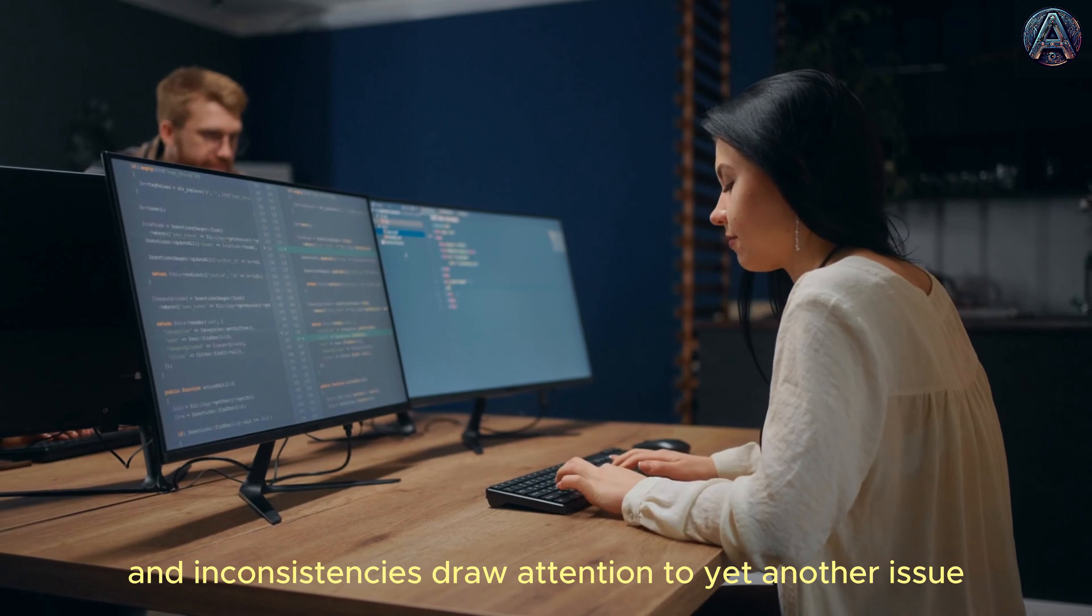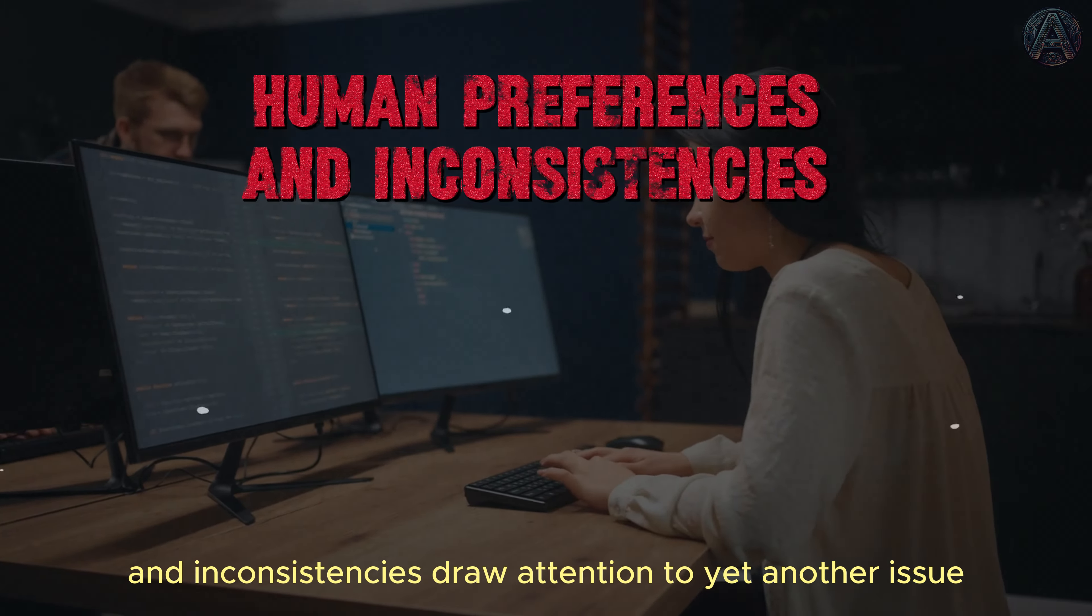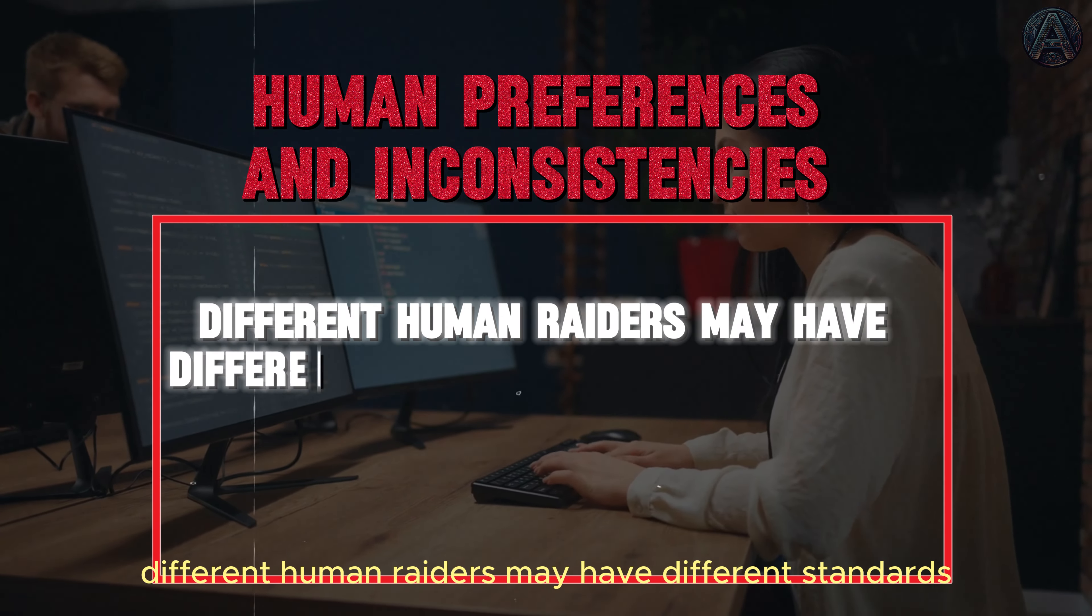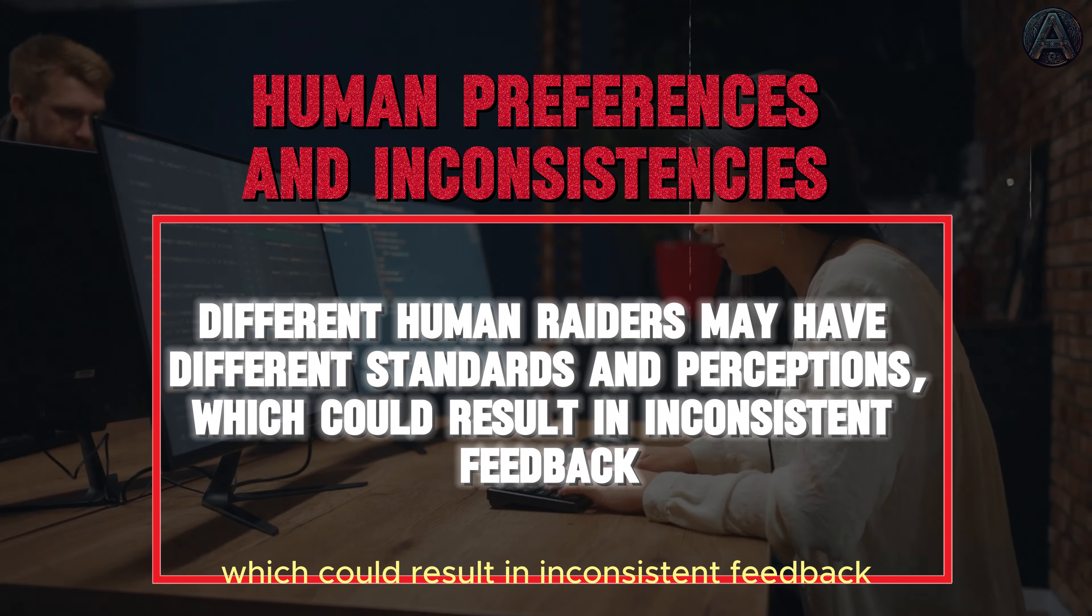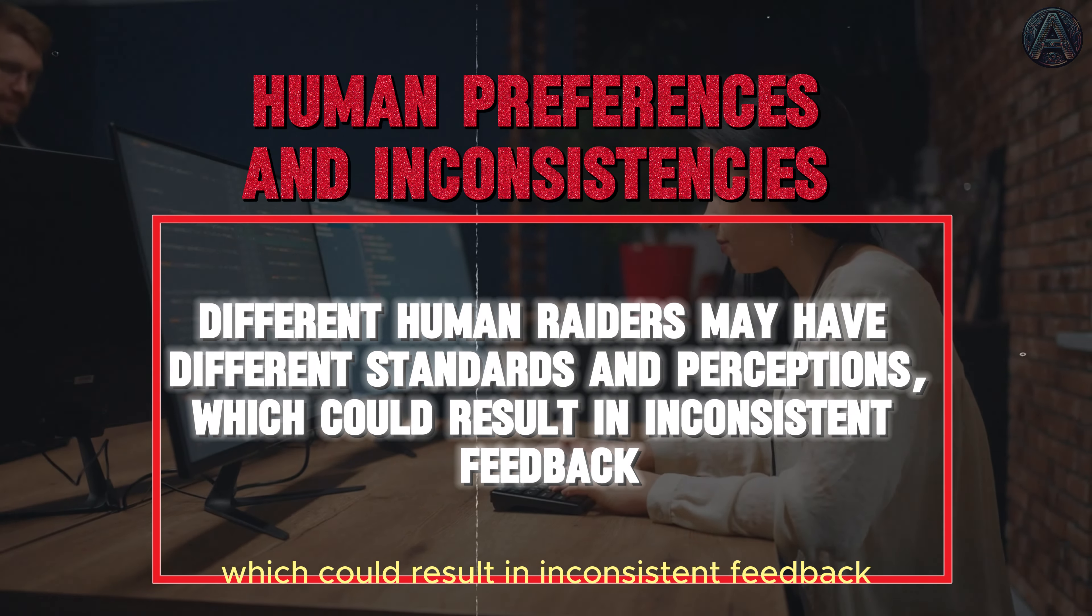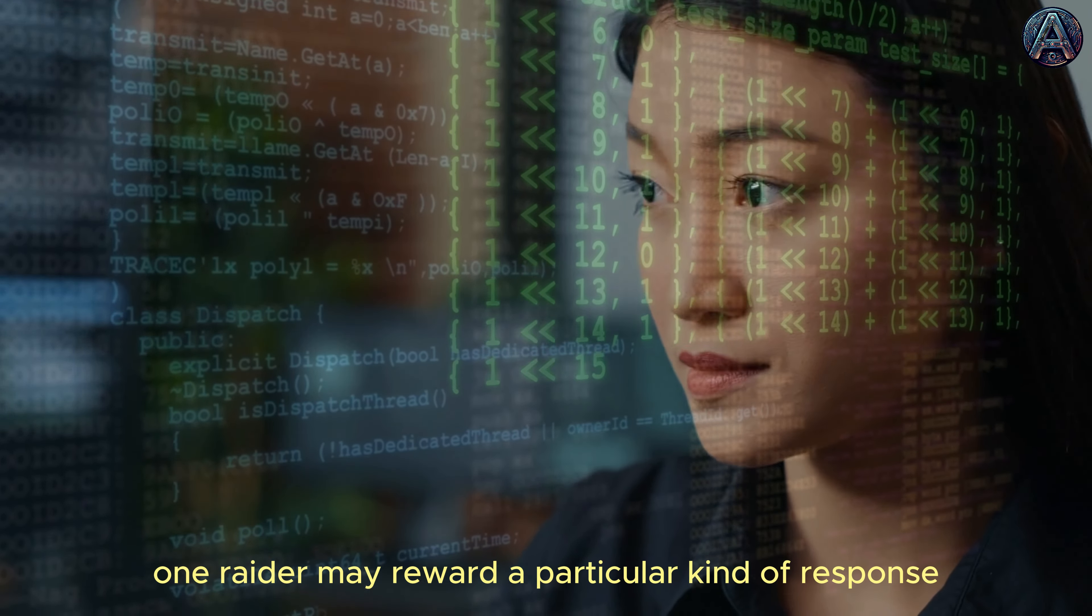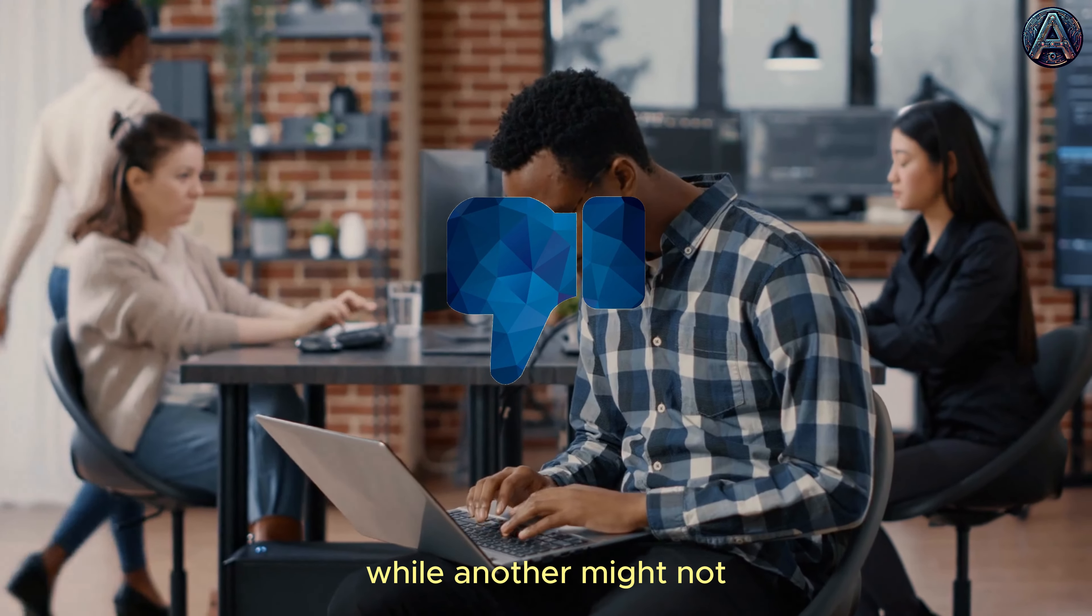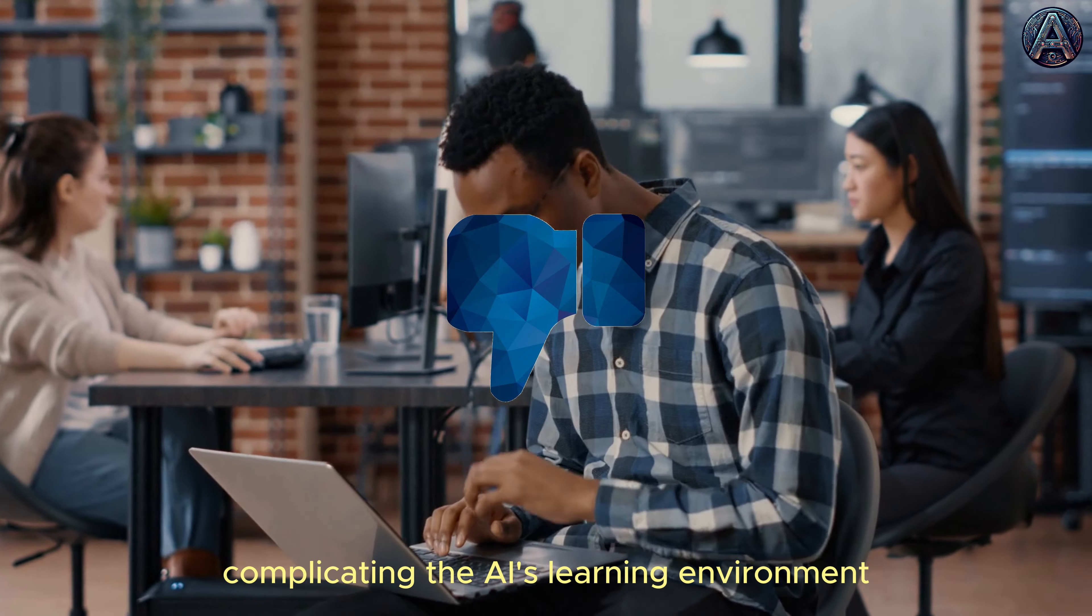Human preferences and inconsistencies draw attention to yet another issue. Different human raters may have different standards and perceptions, which could result in inconsistent feedback. For example, one rater may reward a particular kind of response, while another might not, complicating the AI's learning environment.